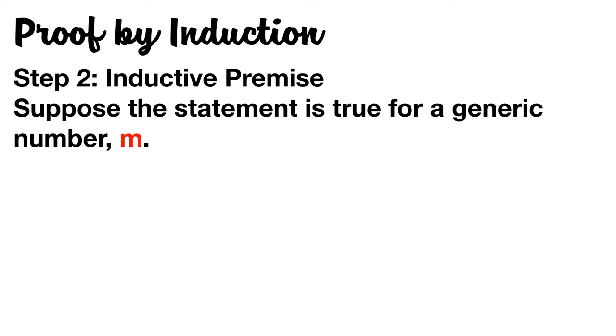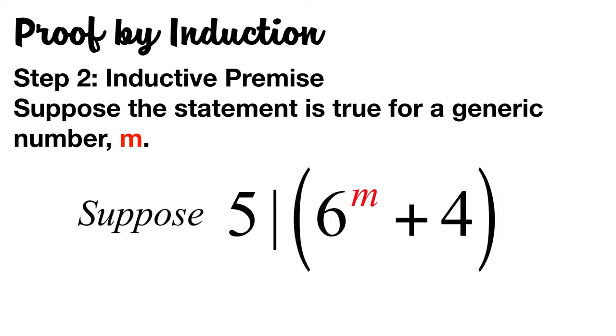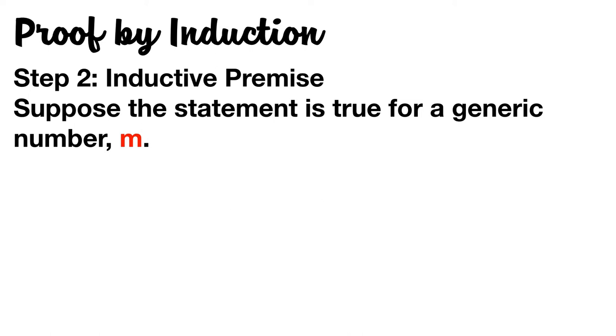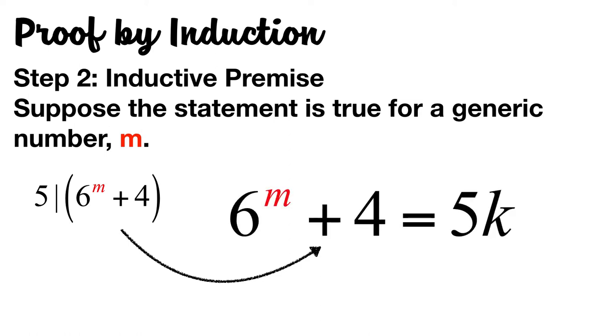Thus, we will suppose that five divides the quantity six to the M plus four. Applying our definition of divides, we can rewrite the division statement as a multiplication statement, where six to the M plus four equals five times some number K.